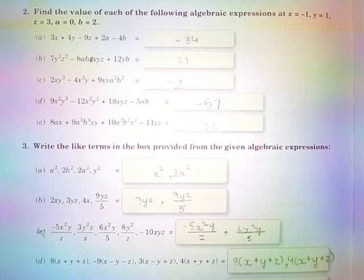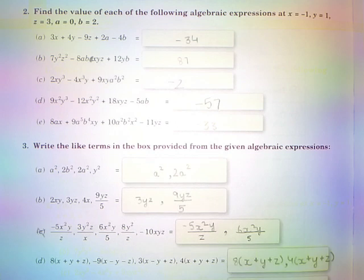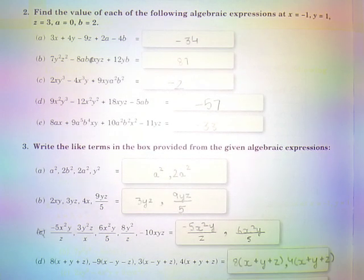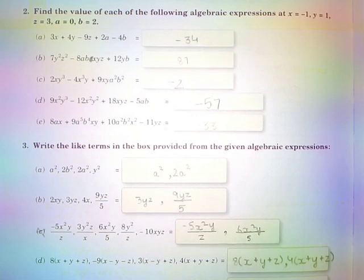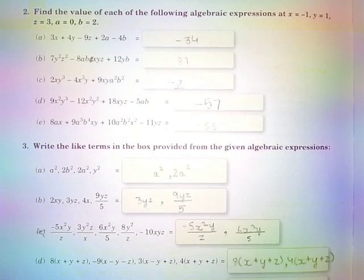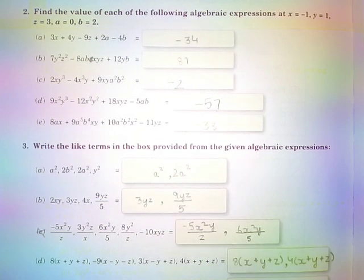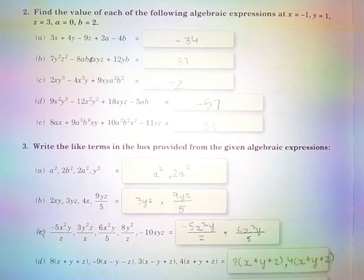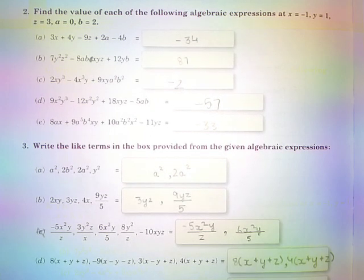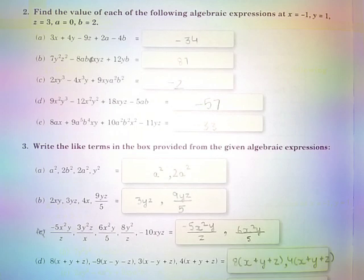Part A: 3x + 4y − 9z + 2a − 4b is equal to −34. Part B: 7y²z² − 8abc − 8abcxyz + 12yb is equal to 87.